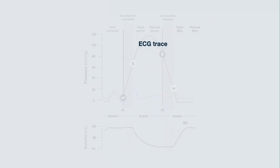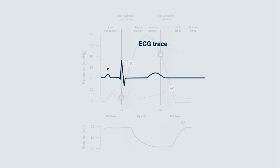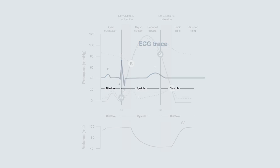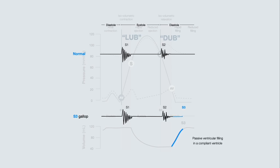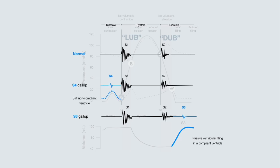Looking at an ECG trace for a cardiac cycle, the P wave represents atrial depolarization, the QRS complex represents ventricular depolarization, and the T wave represents ventricular repolarization. The heart sounds are formed by the closure of the AV and semilunar valves. Closure of the AV valve causes S1, heard as lub, and closure of the semilunar valve causes S2, heard as dub. An S3 occurs after S2 if passive ventricular filling occurs in a compliant ventricle, and an S4 gallop occurs before S1 when the atria contract to push blood into a stiff, non-compliant ventricle.